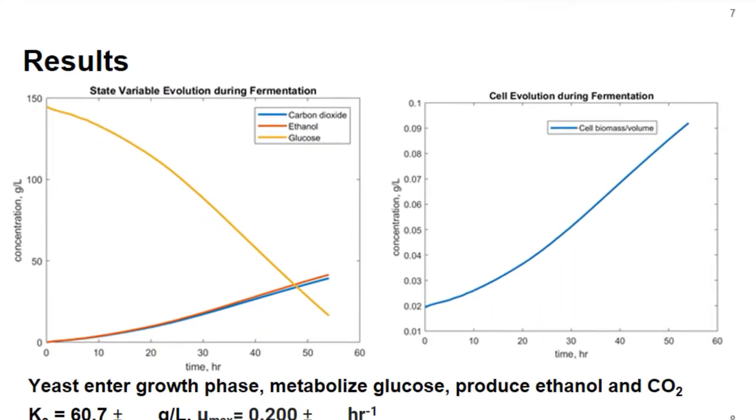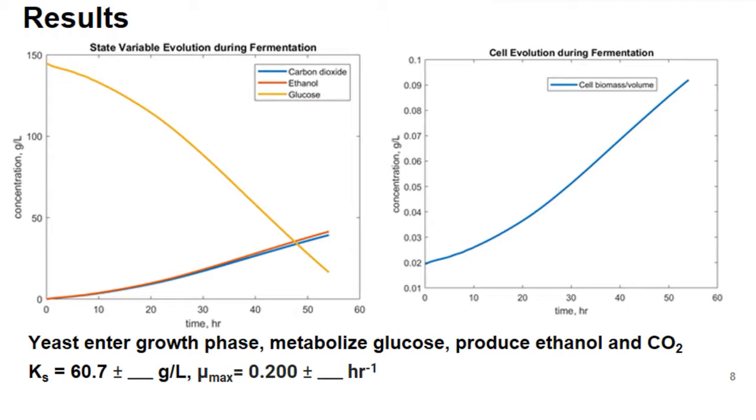Coming to the results we observed, we see that as yeast entered the growth phase, they did in fact consume the glucose present in the solution. We have the levels of glucose dropping over time because the yeast started metabolizing them and forming ethanol and carbon dioxide via ethanol fermentation, as well as the number of cells being produced. We derived this data by looking at the carbon dioxide and correlating it to biomass and performing mass balances. The Monod constant we found was 60.7 grams per liter, and a maximum specific growth rate mu_max of 0.2 per hour.